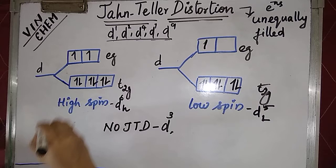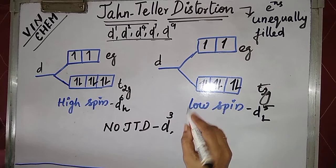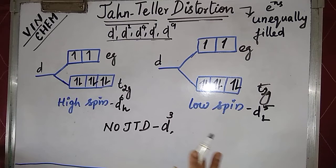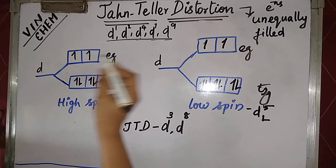For d8, irrespective of low spin or high spin, there is no distortion. If you see d8 — equally filled in both cases. So irrespective of low spin or high spin, there is no distortion in d8.